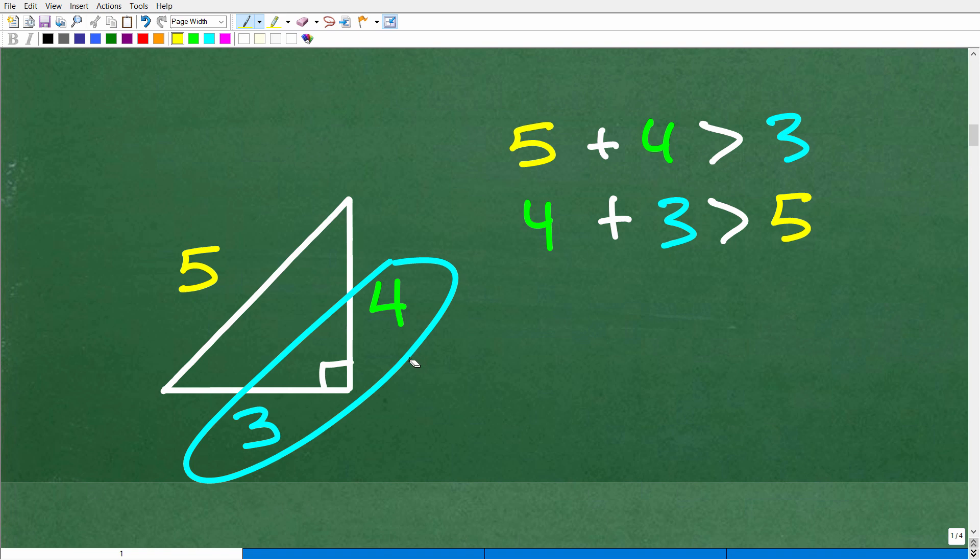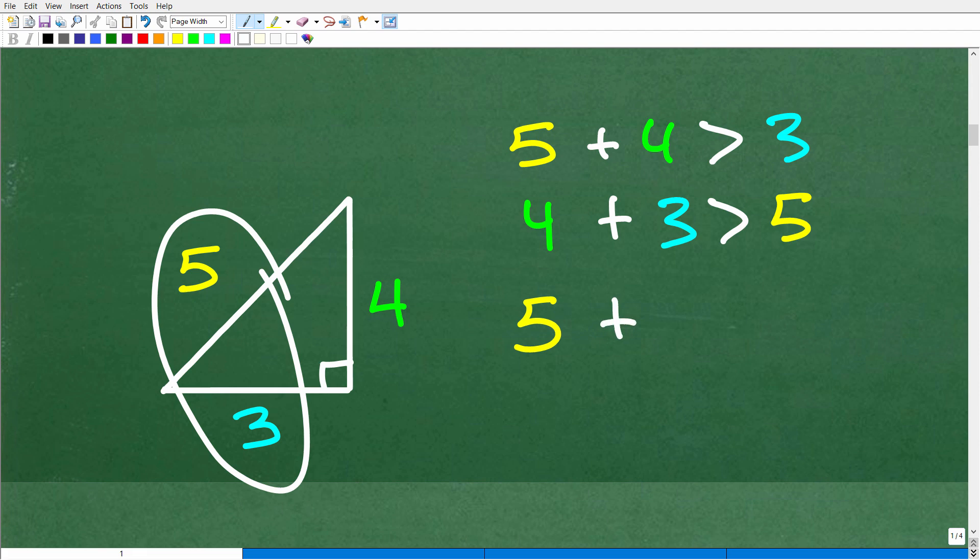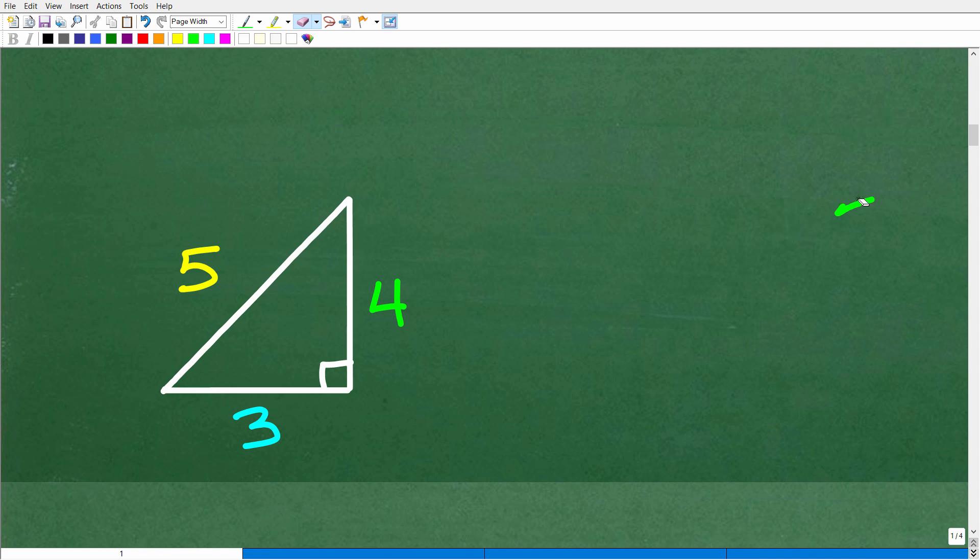And so we just have one more situation to check. That would be 5 and 3. So let's go ahead and do that right now. So 5 plus 3 is that greater than the other side, which is 4. Indeed it is. 8 is greater than 4. So all three of these situations check out. This is the triangle inequality. This is how you know that, in fact, you can close a triangle. Now, in this particular case, this happens to be a right triangle as well.